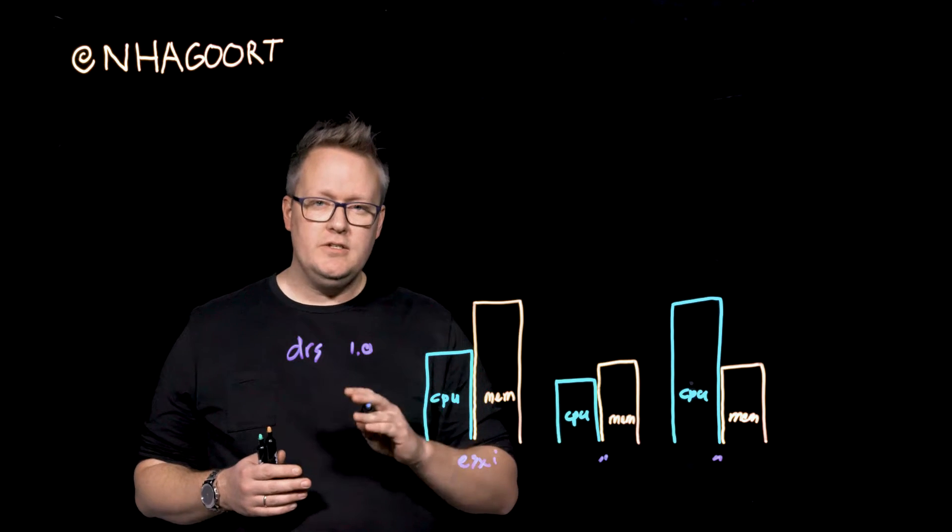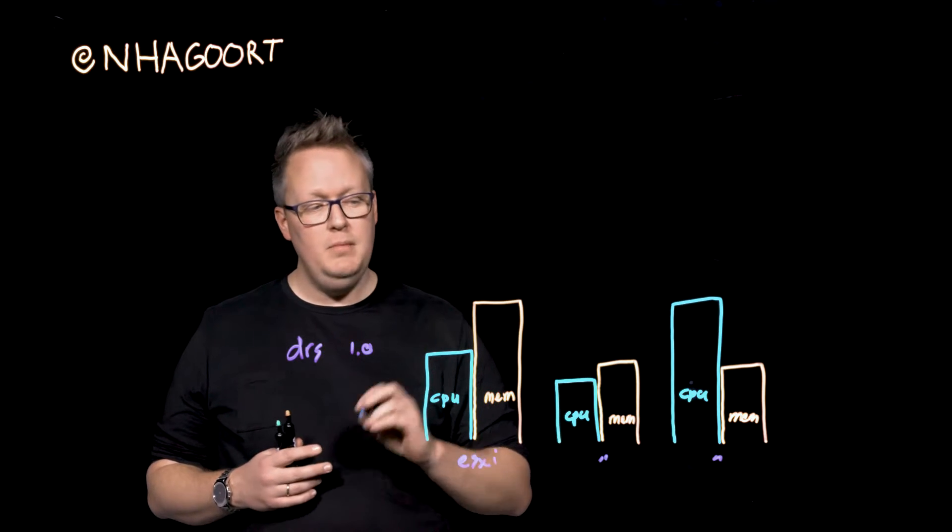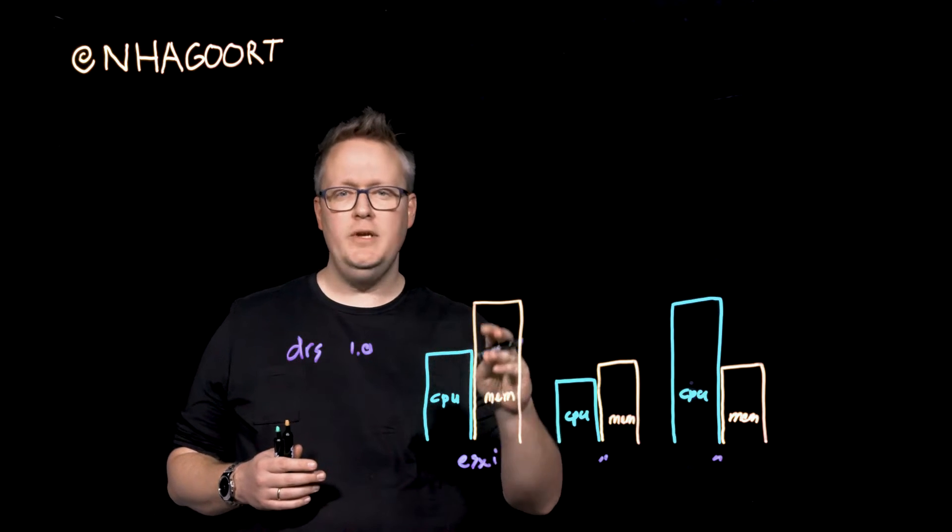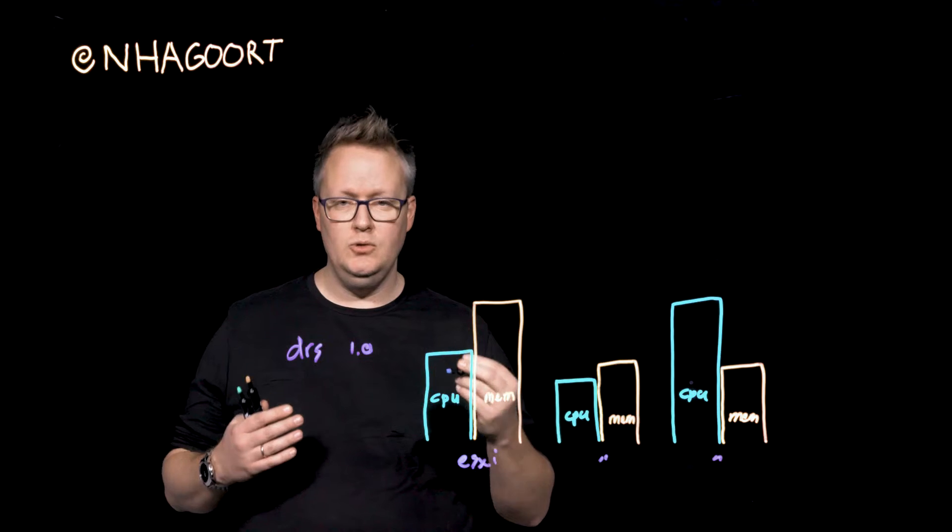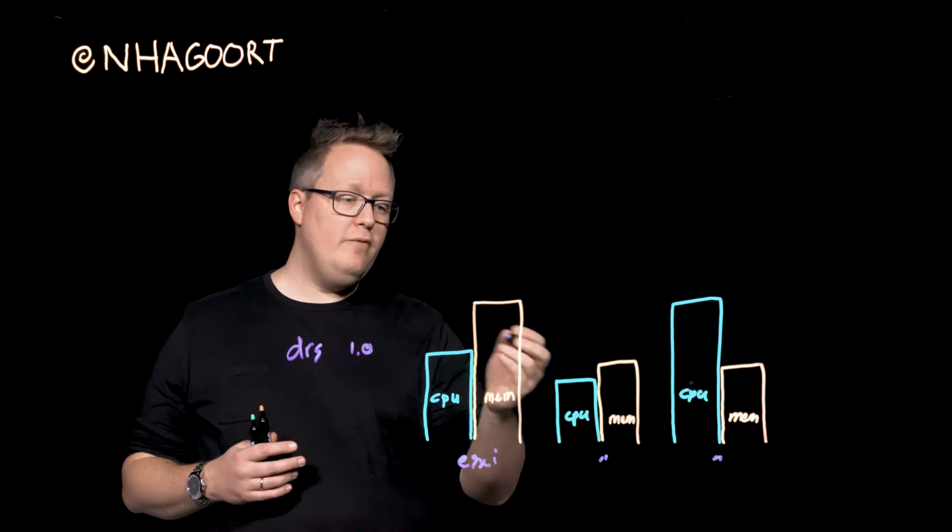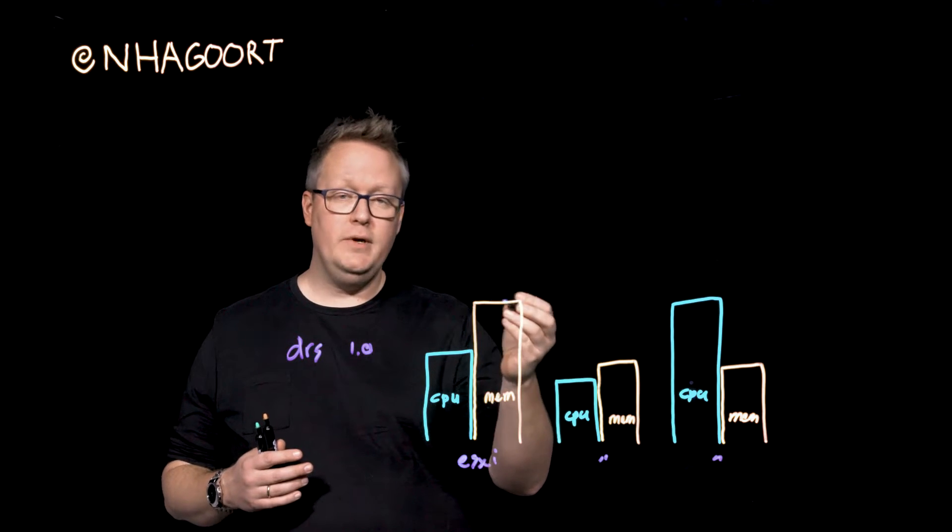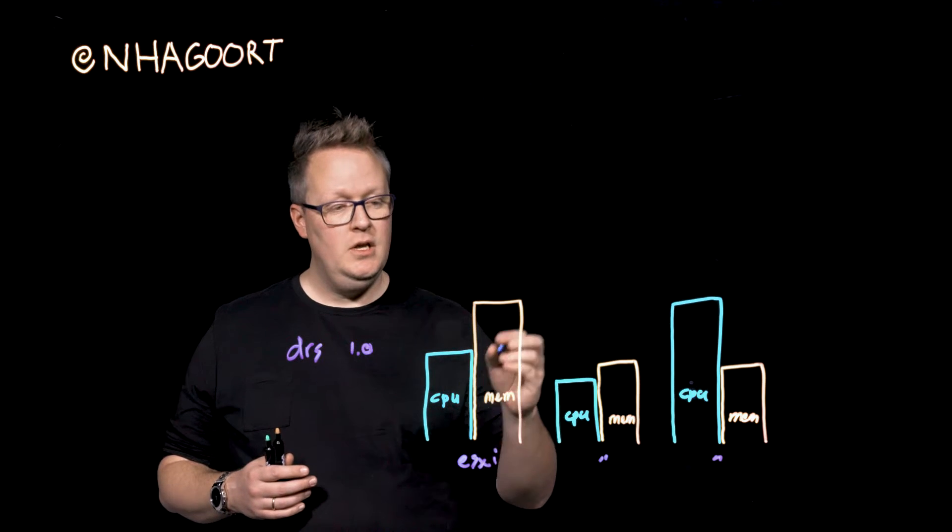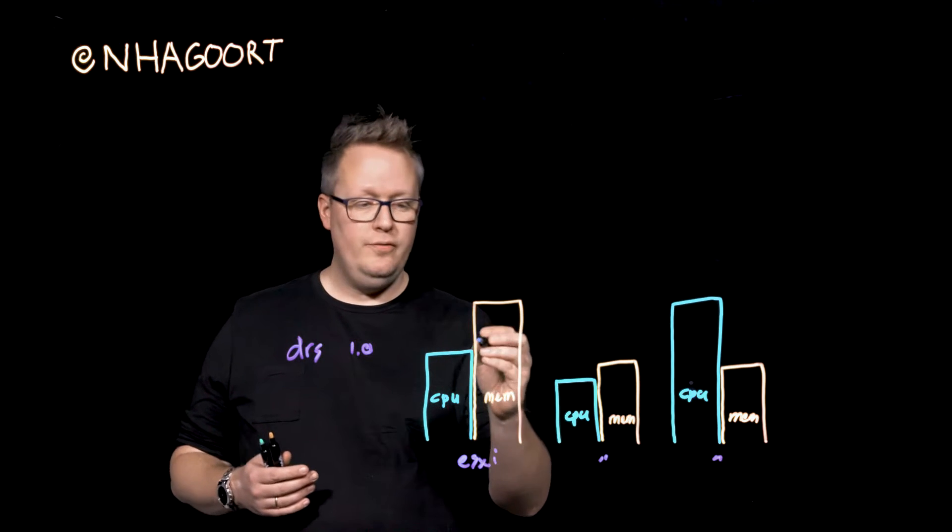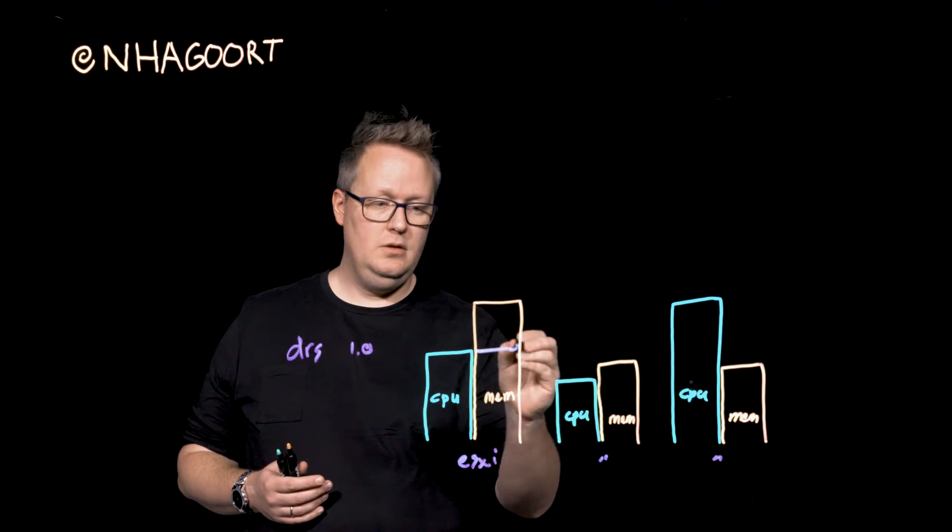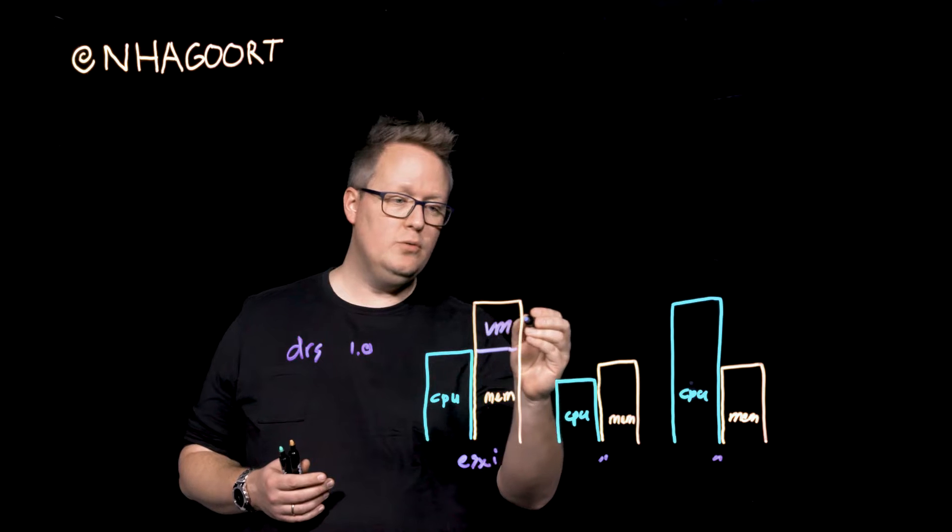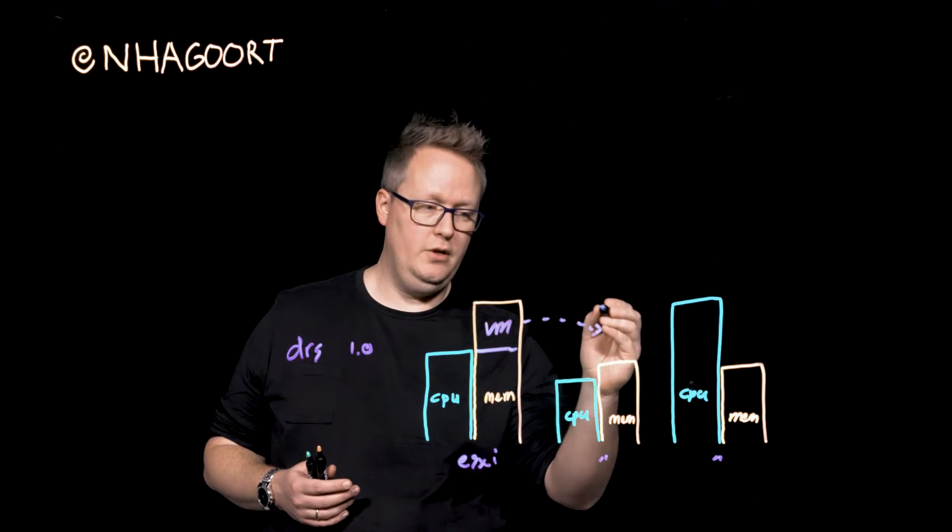We used a cluster-wide deviation model, meaning that DRS wanted the hosts to be sort of equally utilized. So whenever we saw that we have, for instance, high memory pressure on this specific ESXi host, we could move the virtual machine that is responsible for that specific memory load, we could move that to a different host.